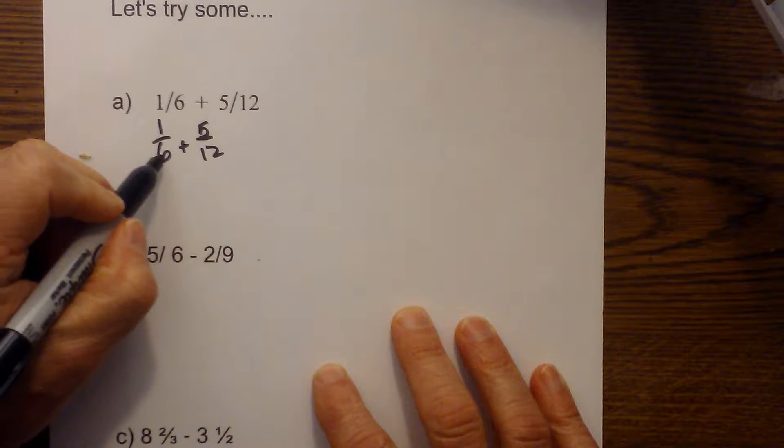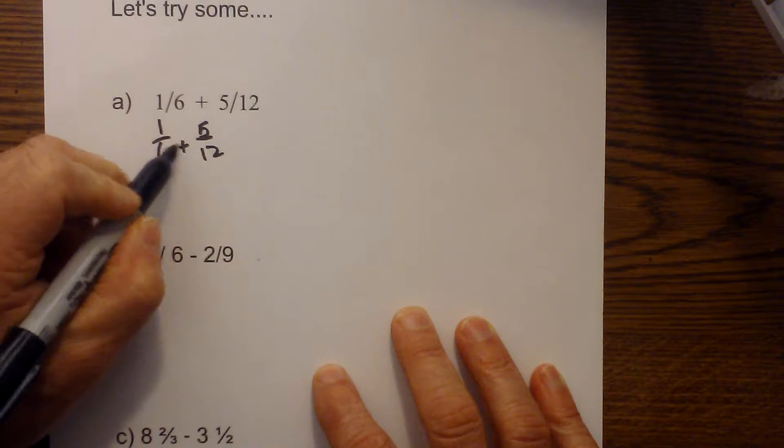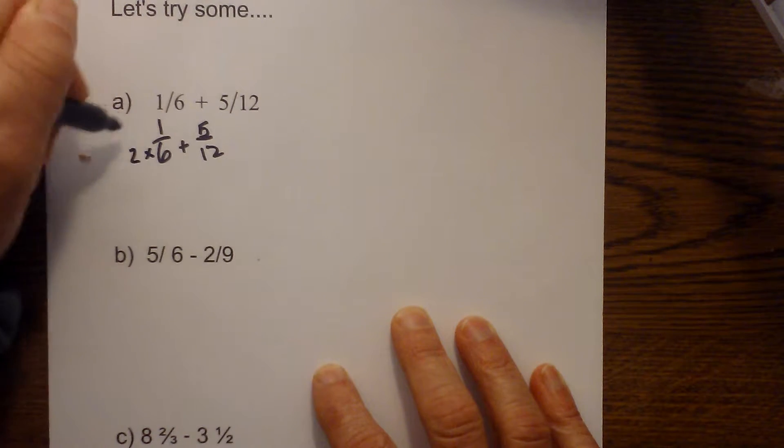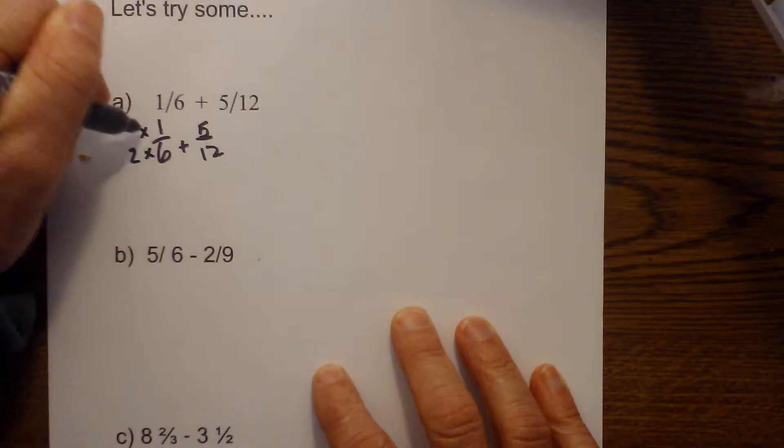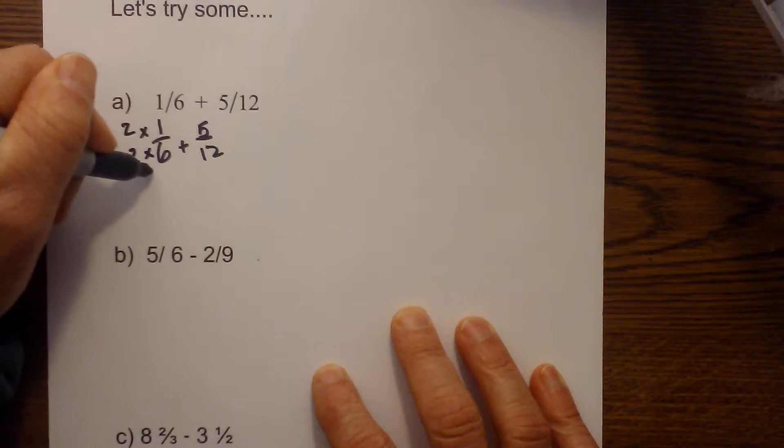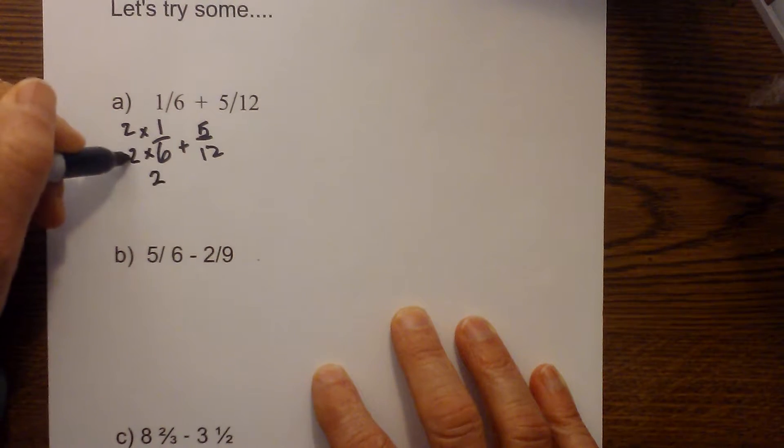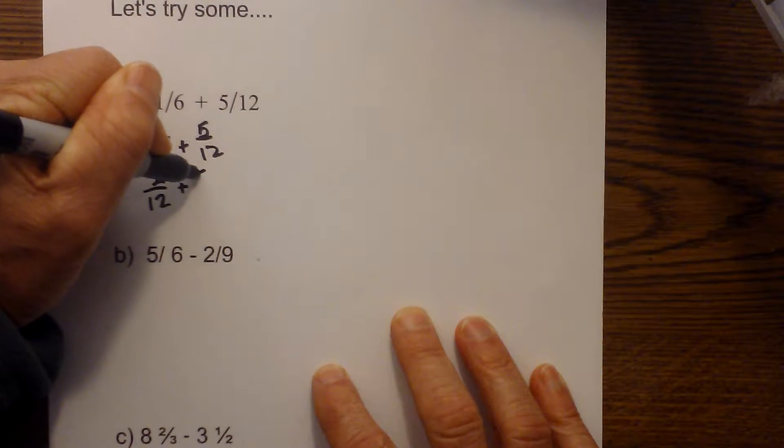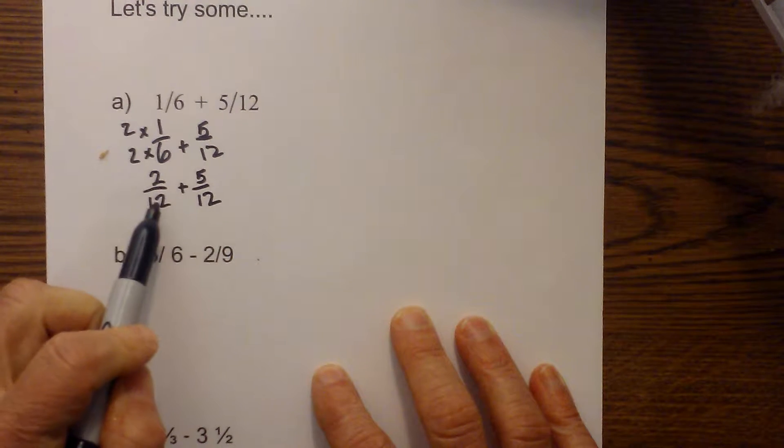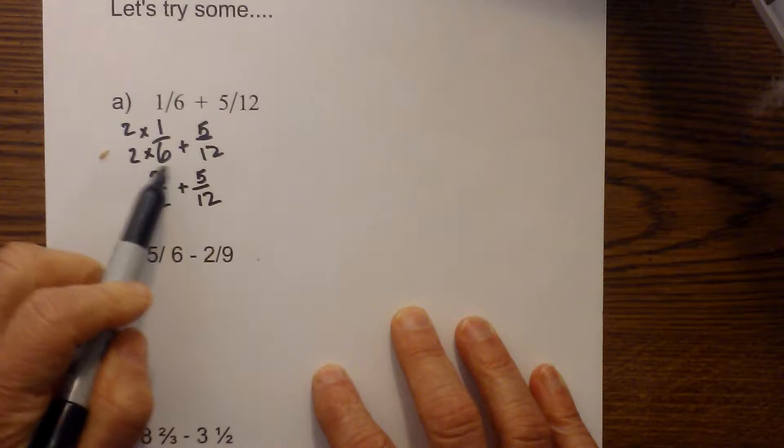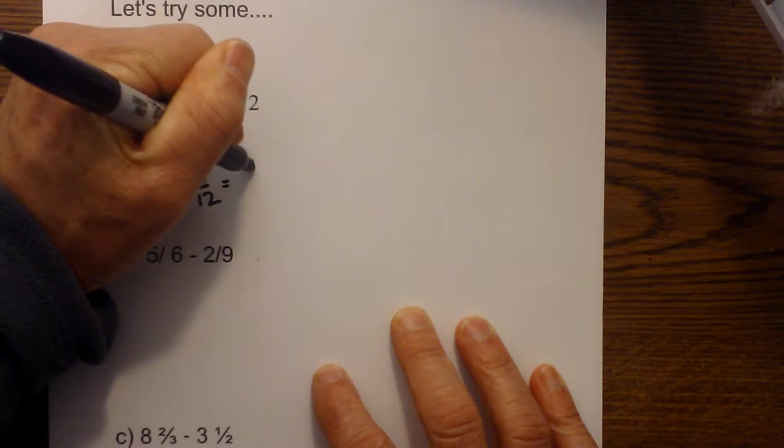So now what I need to do to get six equal twelve, I have to multiply six times two. And what I do to the bottom of the fraction, I do the top. So I will multiply each side by two. So that becomes two times one is two, and two times six is twelve. So now if you'll notice, I have two common denominators. And now I just simply add two plus five equals seven.